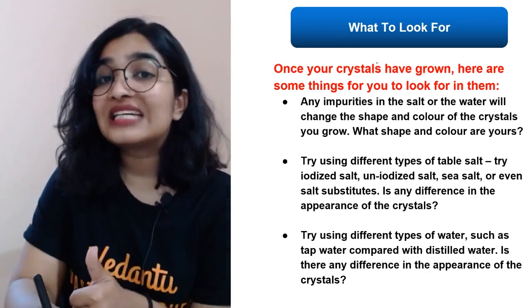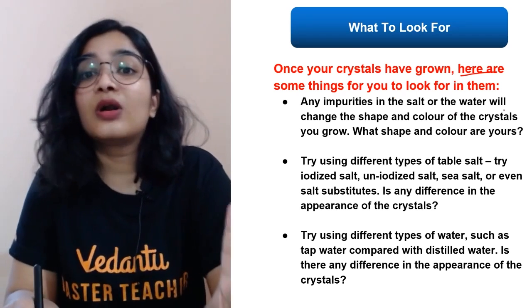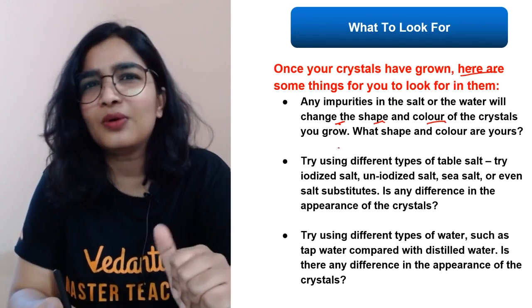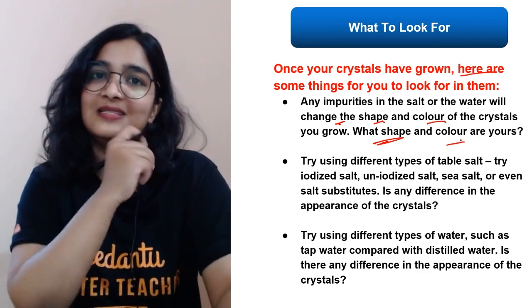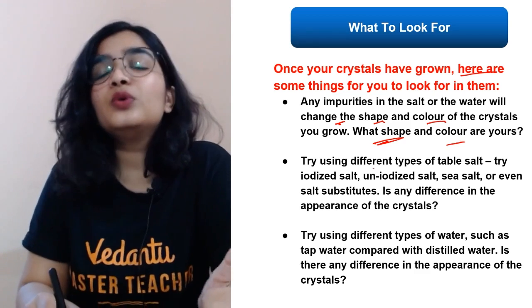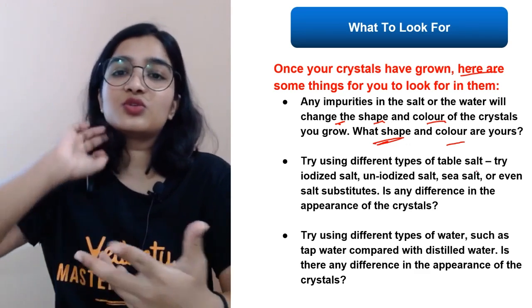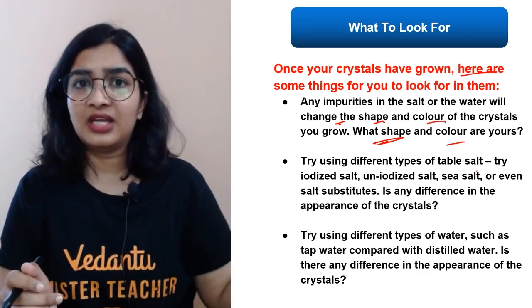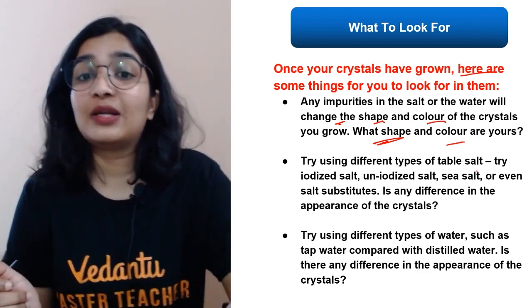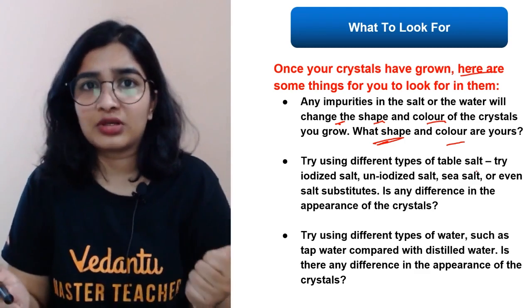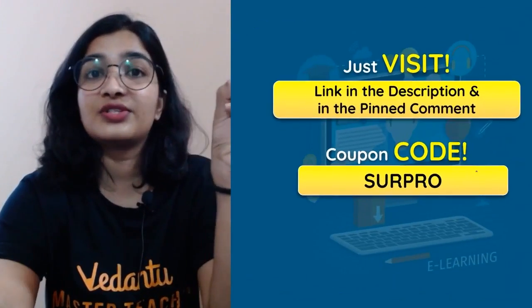Once your crystals have grown, observe them carefully. Any impurities in the salt or water will change the shape and color of the crystals. Note the shape and color and let me know in the comments! Try using different types of salt — iodized, uniodized, sea salt — and even try baking soda mixed with vinegar to make a salt for crystallization. You can also use different types of water — tap water versus filtered — and compare the appearance of the crystals.